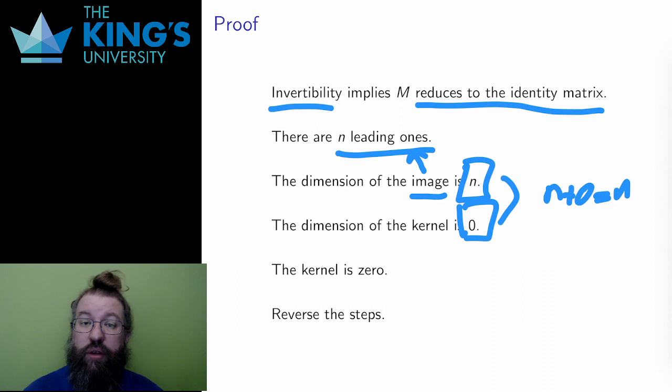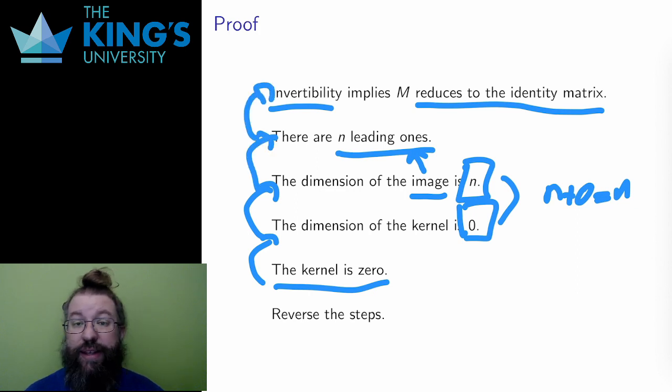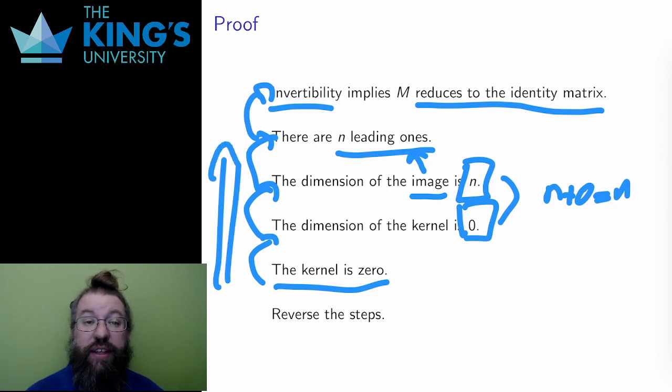Zero kernel means that the kernel has dimension zero. That means that the image has dimension n, which means the rank is n, which means that M reduces to the identity, which means that M is invertible. By reversing the steps, I'm done and the statement is proved because I've done both directions.